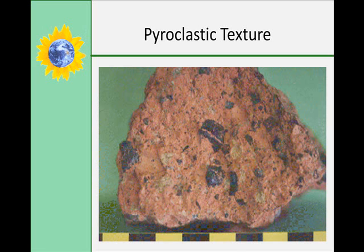Pyroclastic textures are also called fragmental textures because pieces of rock and ash come out of a volcano and get welded together by the heat. Volcanic tuff is made of volcanic ash — that's a type of pyroclastic rock. Volcanic breccia contains fragments of fine-grained igneous rocks that are larger than the ash that's binding it all together.